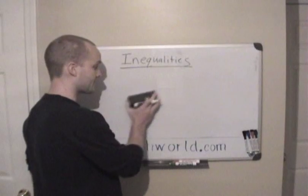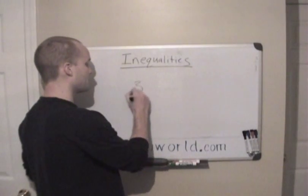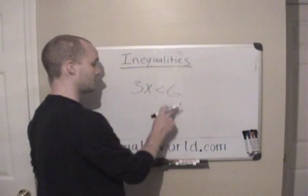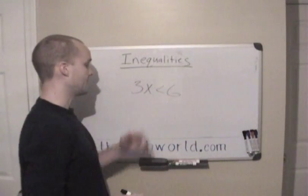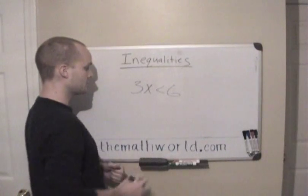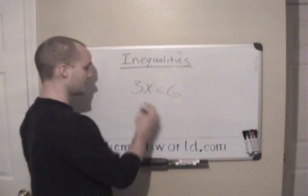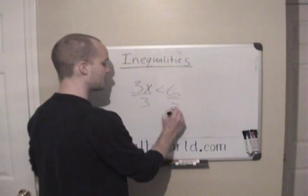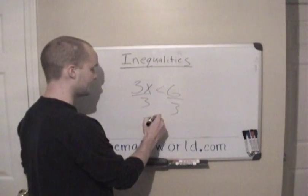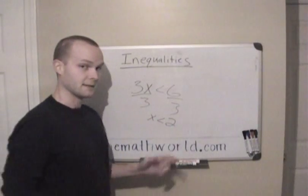A lot of times you're asked to solve for an inequality. So you may be given 3x is less than 6, and they ask you to solve for x. Much like you would if there was an equal sign, you divide by 3 from both sides — you want to get x alone. In this case, x is less than 2.